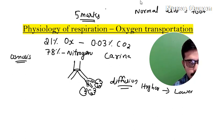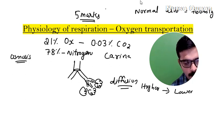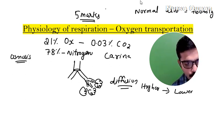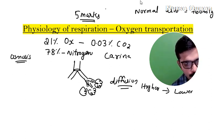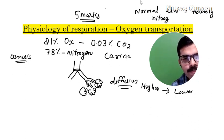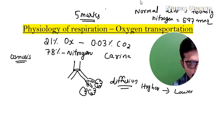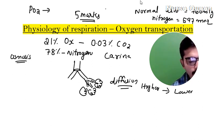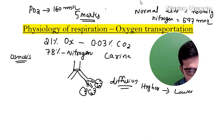Normal atmospheric pressure is 760 mmHg. Nitrogen is abundant — we don't need to add nitrogen. Nitrogen is 597 mmHg. The partial pressure of oxygen is also discussed here.